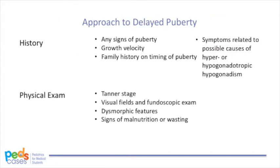When approaching a child with concerns for delayed puberty, it is important to first clarify what is meant by delayed puberty — absent breast development, lack of hair, or something else. Finding out about growth velocity is key. Individuals with constitutional delay of growth and puberty, the most common cause, show a normal velocity on their height trajectory. We also need to know if there are any other late boomers in the family, as genetics is a major determinant of the timing of puberty.